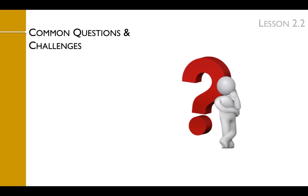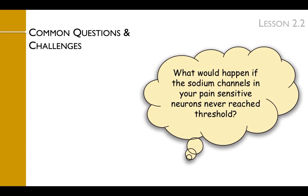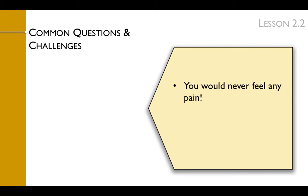Students are often challenged by the content in this lesson, so it is very important that you understand the concepts well so you can guide your students. After teaching the action potential, a useful extension question is: What would happen if the sodium channels in your pain-sensitive neurons never reached threshold? This question reinforces understanding of the process and its consequences, and acts as a bridge to a real patient disorder — congenital analgesia. The answer is that you would never feel pain, because without sodium channels opening, no action potential is fired and no pain signal reaches the brain. One patient with this condition was profiled in the documentary A Life Without Pain, which will be discussed further in Lesson 2.5.